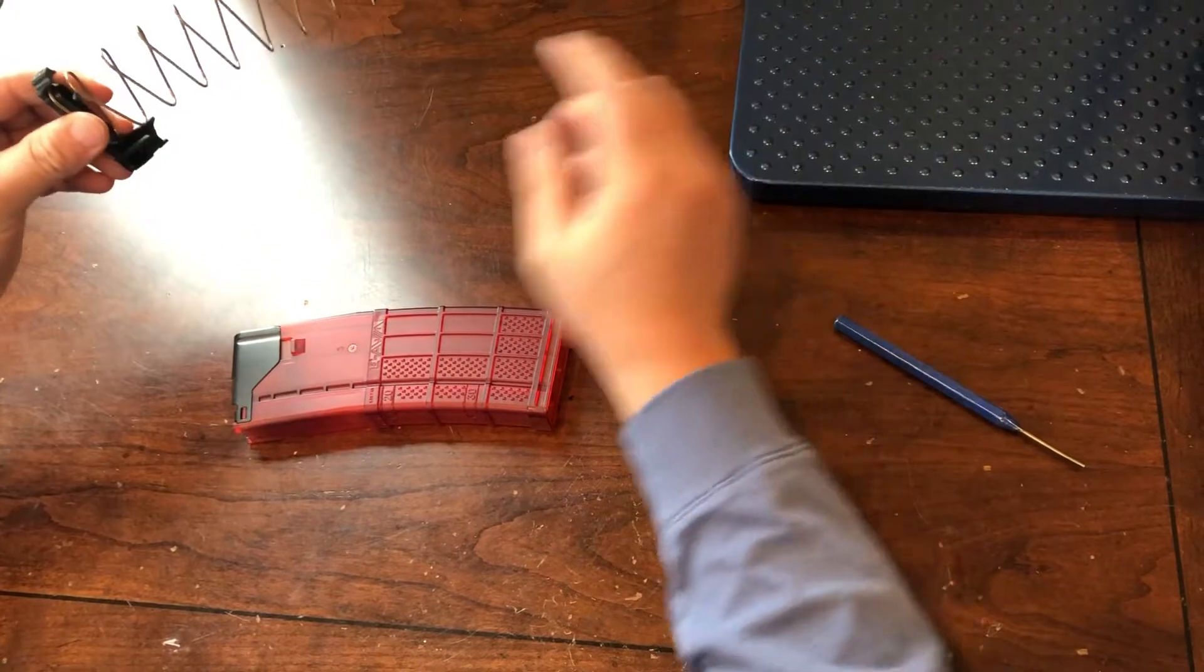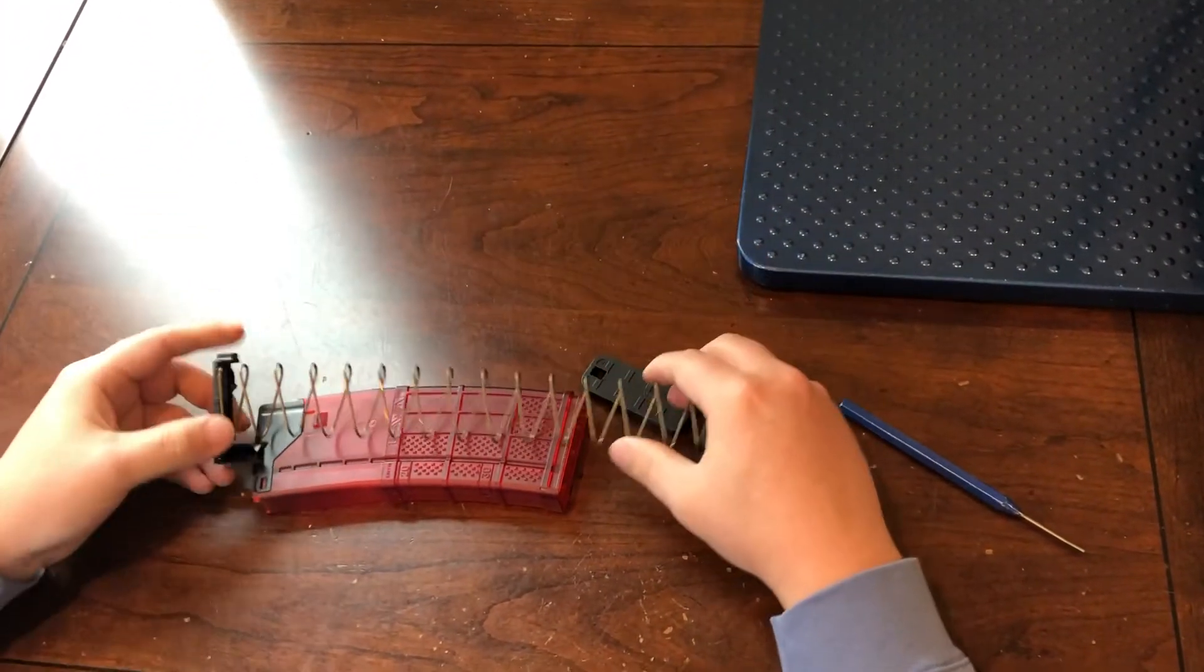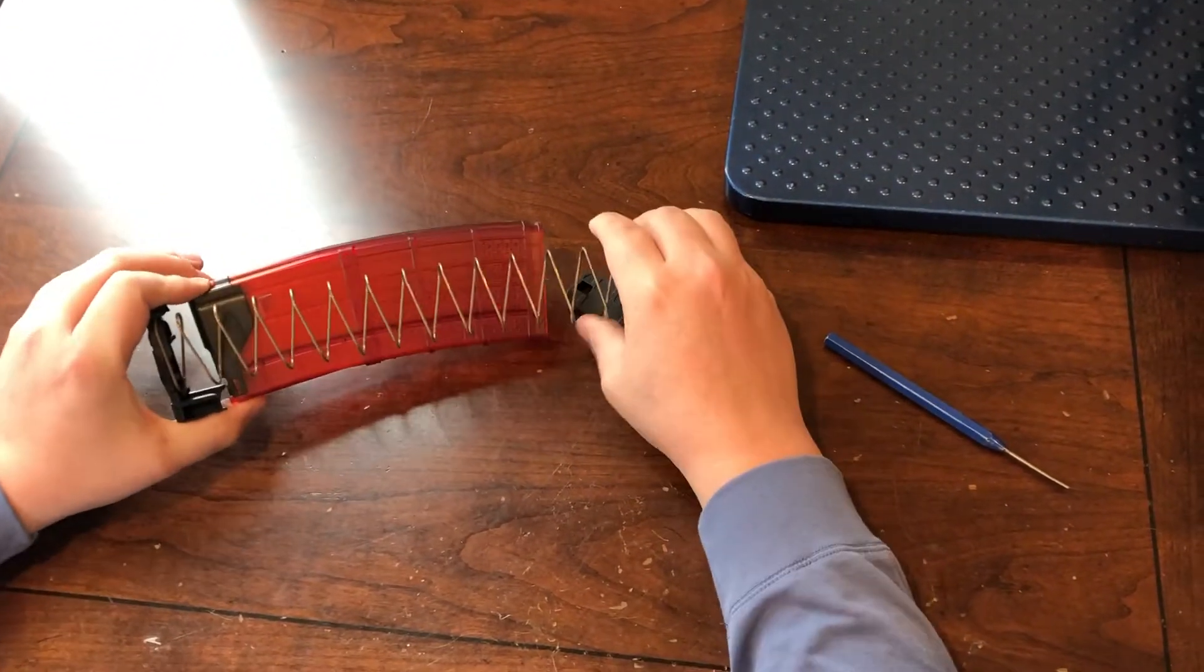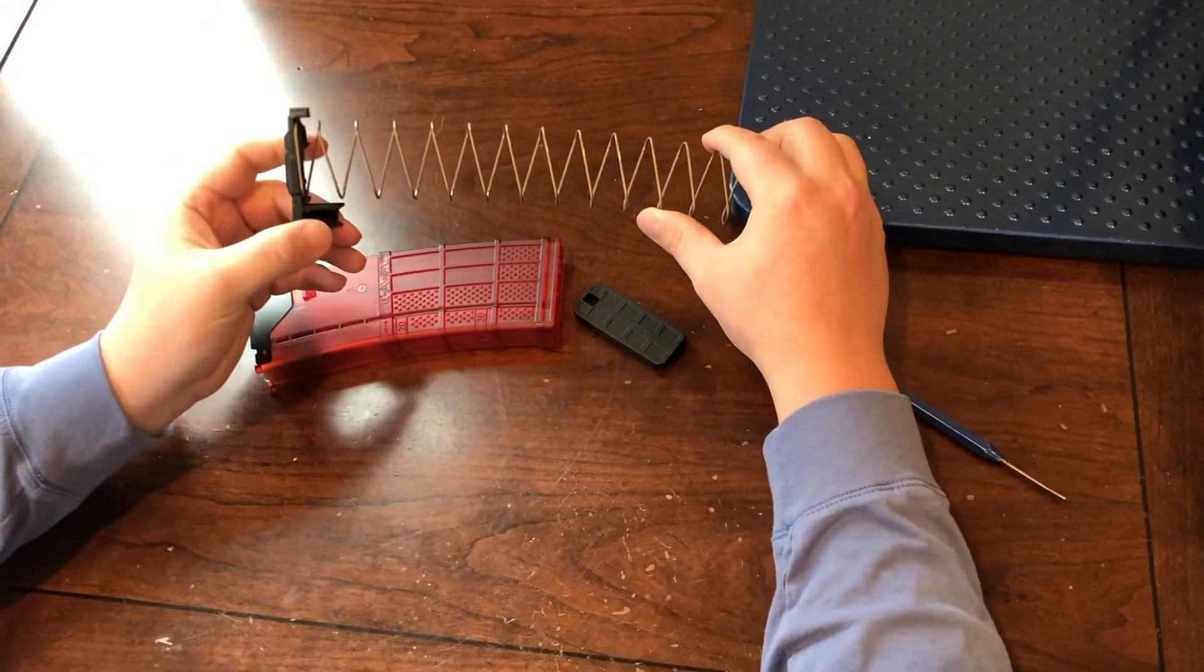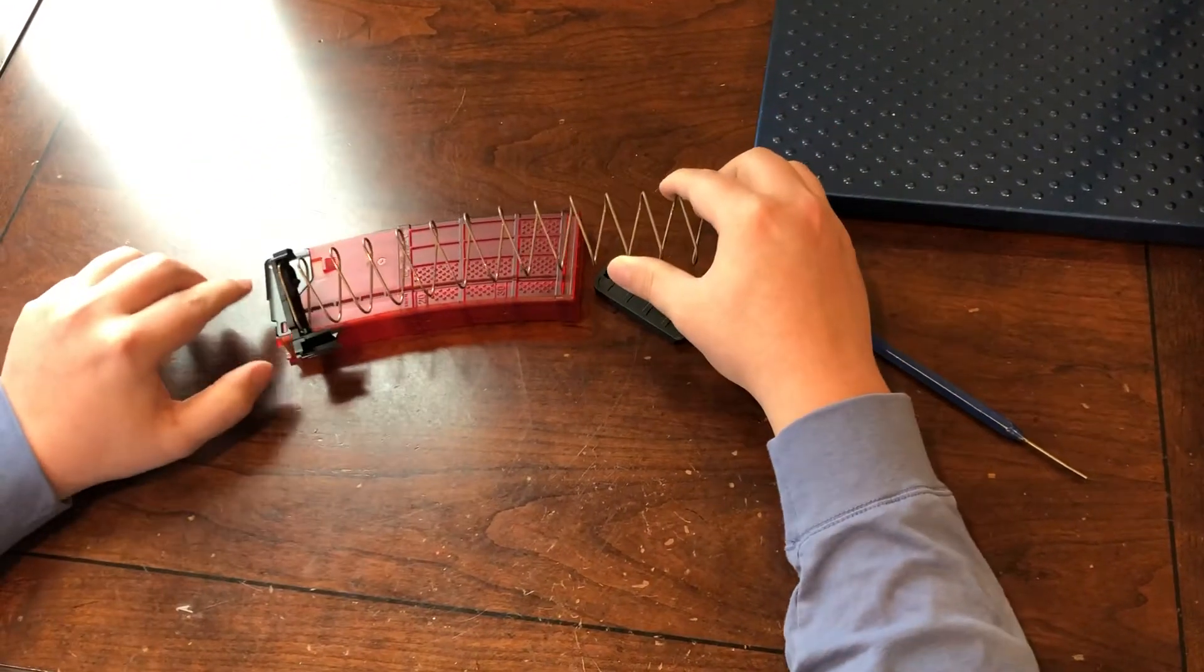So you can see that the spring has a little bit of a curve to it. That's going to go along with the curve of the body or just know that this larger piece right here is going to go towards the front.